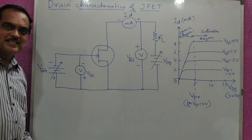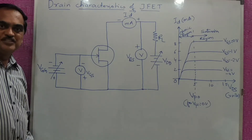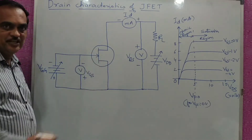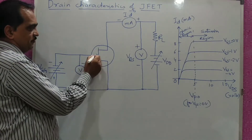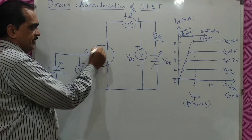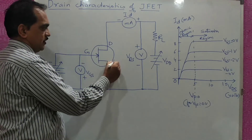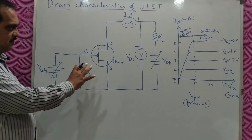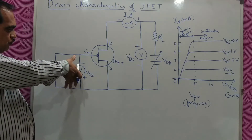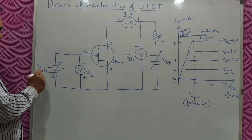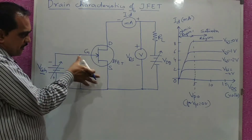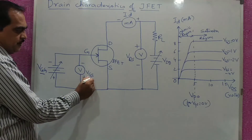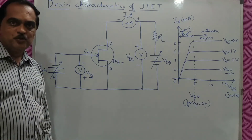Today we will see Drain Characteristics of JFET. Here we have shown a symbol of N-channel JFET — the arrow is shown inside. This is the gate, this is the drain, and this is the source. The JFET is connected in a circuit where input voltage VGG is given to the gate, applied across gate and source, which you can measure by a voltmeter as VGS.